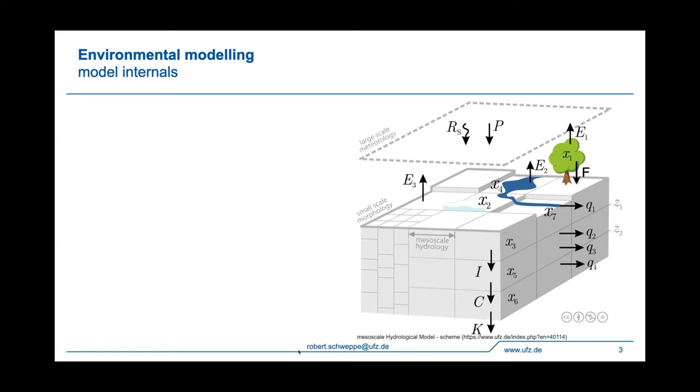And here on the right, you can see a scheme of the hydrologic model MHM, which is developed at our department. And it will serve as an example here to demonstrate the problem of parameter estimation for distributed models. So this model is basically describing the water balance on the land surface by change in storage, which is the difference between precipitation, evapotranspiration and the runoff.